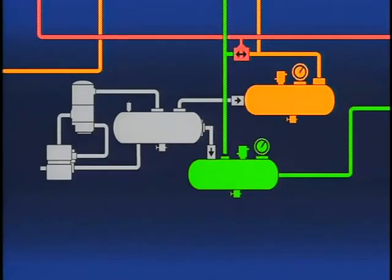The air dryer is installed in the discharge line between the compressor and the supply reservoir and also interacts with the governor.